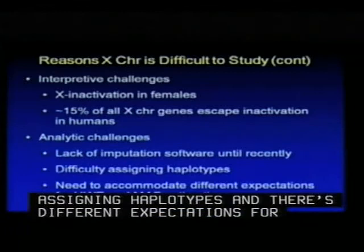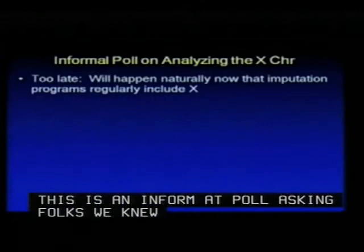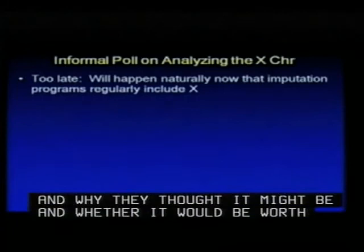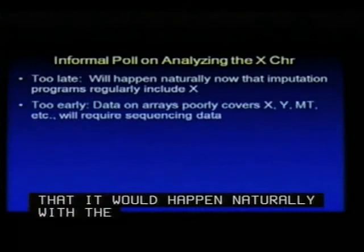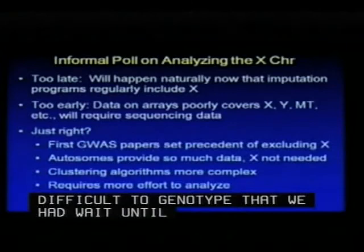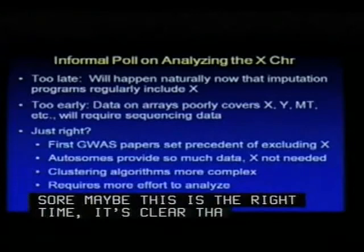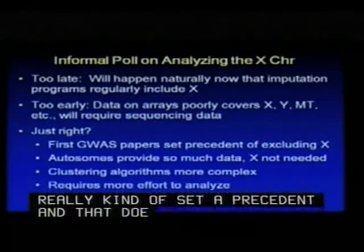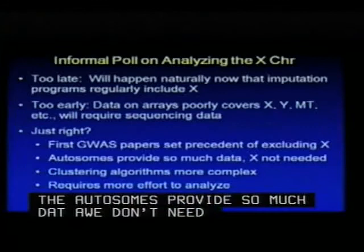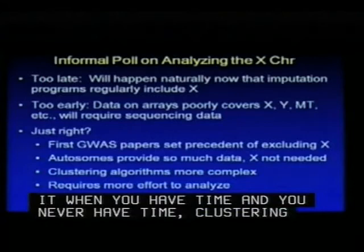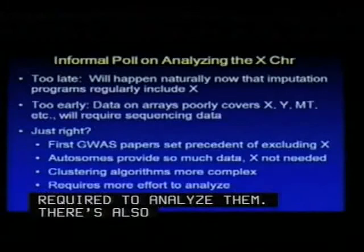This is not hard — it just has to be done a little differently from the autosomes. In an informal poll of collaborators, some felt we really didn't need to stimulate this, that it will happen naturally now that imputation programs regularly include the X chromosome. Others felt we were too early and should wait until sequencing could better address it. Or maybe this is the right time. The first GWAS papers set a precedent of excluding the X that hasn't been questioned much since, and there's somewhat lower power with 3N versus 4N genotypes when combining males and females.